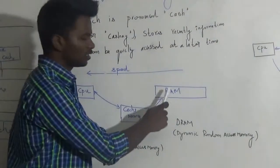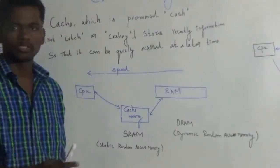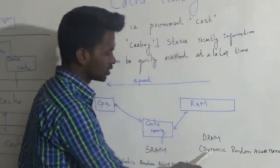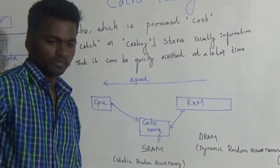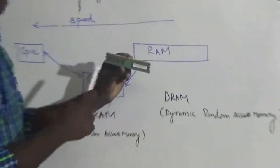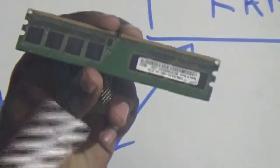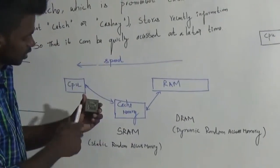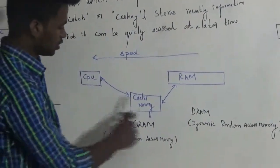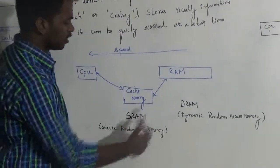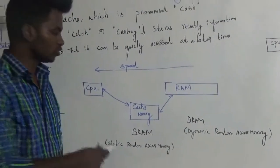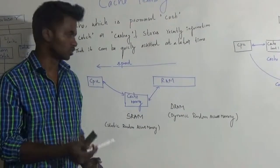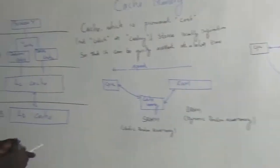We can use random access memory. There are two types of RAM: DRAM (Dynamic Random Access Memory) and SRAM (Static Random Access Memory). Cache memory is SRAM — Static Random Access Memory. For the difference between these RAM types, you can click on the RAM video for more detail.